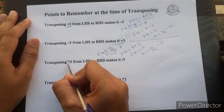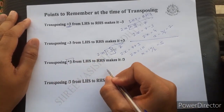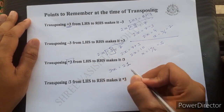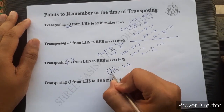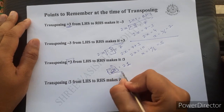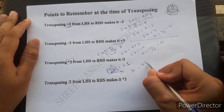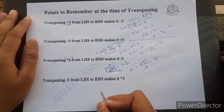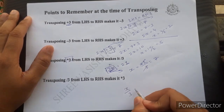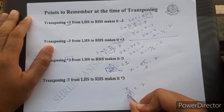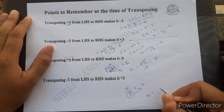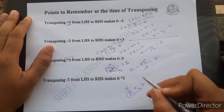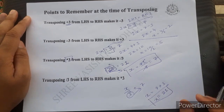When transposing a multiplication — for example, 3x equals 21 — the 3 and x have a multiplication relation, so the 3 moves to the other side as division: x equals 21 divided by 3 equals 7. Conversely, for x divided by 3 equals 7, the division becomes multiplication on the other side: x equals 7 multiplied by 3 equals 21. Remember these transposing rules for moving numbers from LHS to RHS.